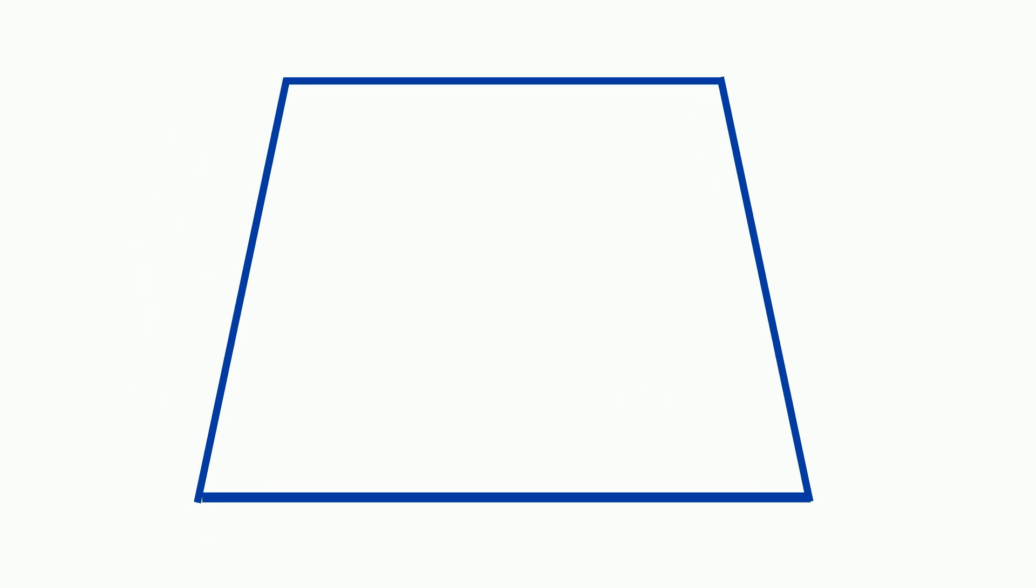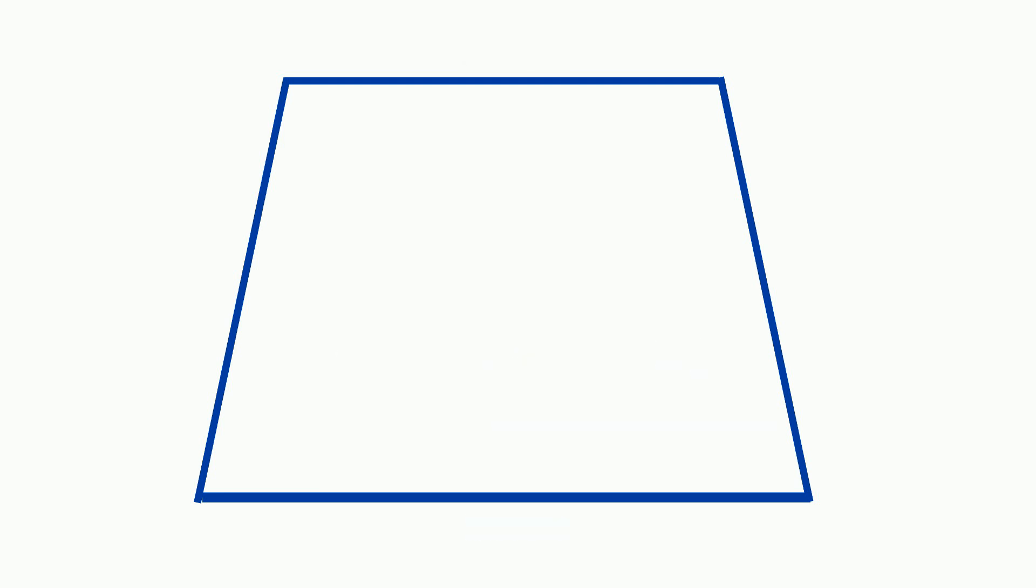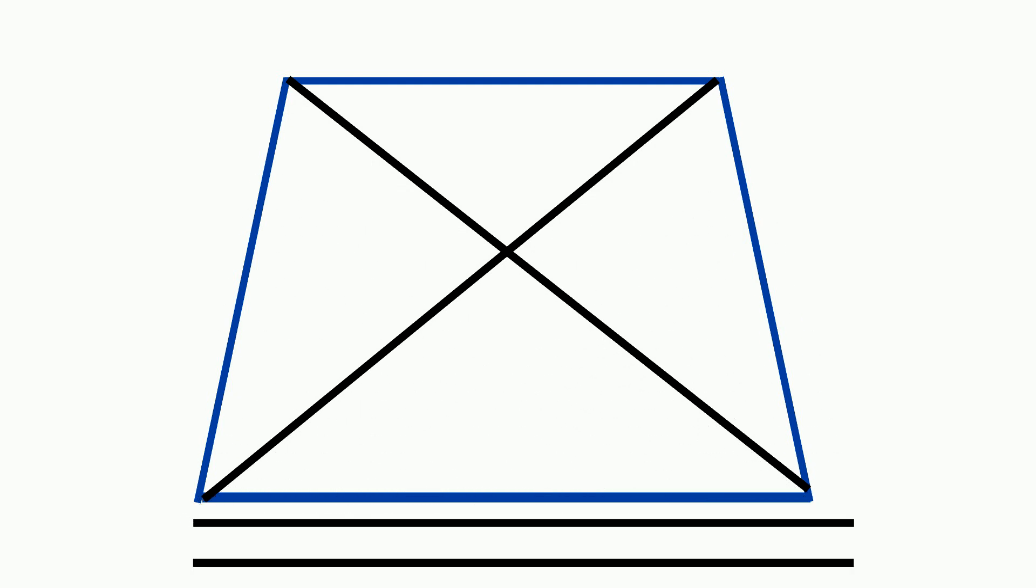The median is a line halfway between the bases. The length is the average of the two base lengths. The diagonals of an isosceles trapezoid have the same length and divide into the same proportions.